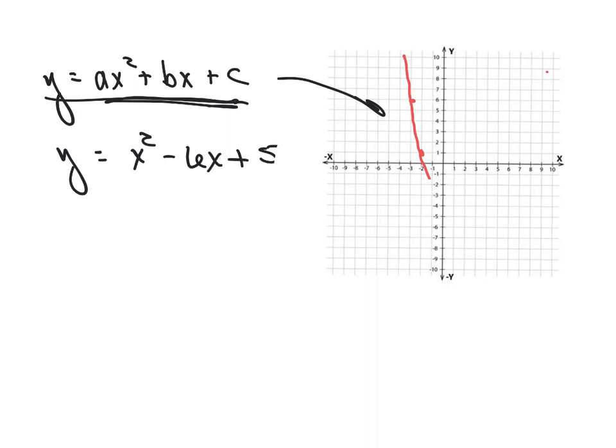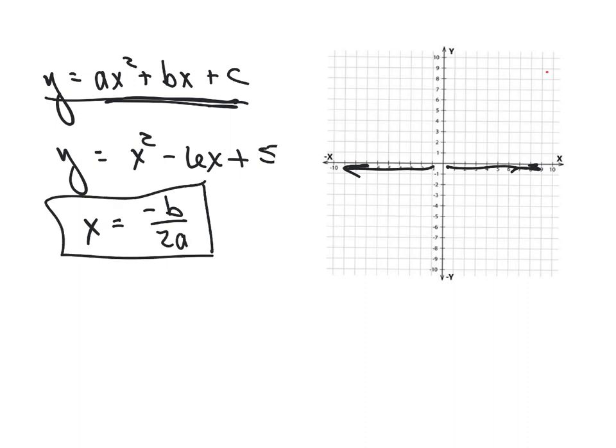We also know that the vertex - the lowest spot or the highest spot, where it changes direction - the x value of that, knowing how far to go left or right of the y-axis, is going to be negative b over 2a. That is the formula to find out how far left or right of the y-axis that vertex is going to be. I'm not going to go through the math. If you want to see how they got that formula, bottom of page 614. I just give you the formula and we'll go from there.